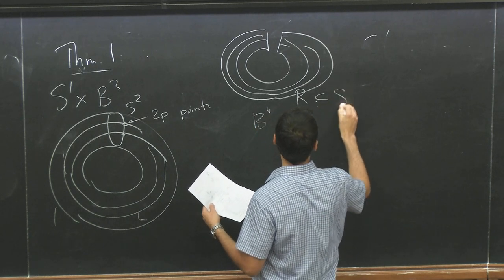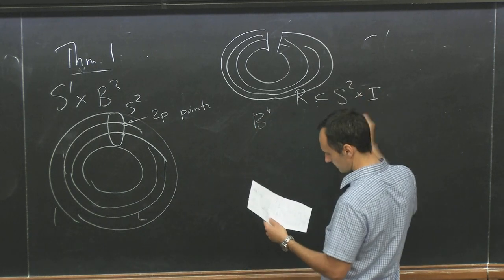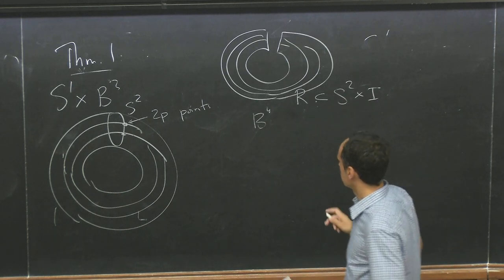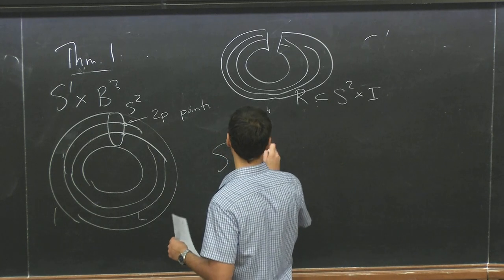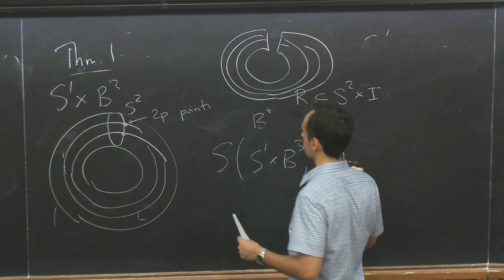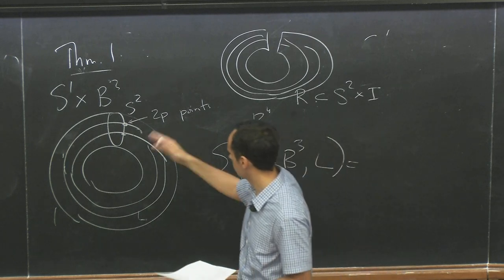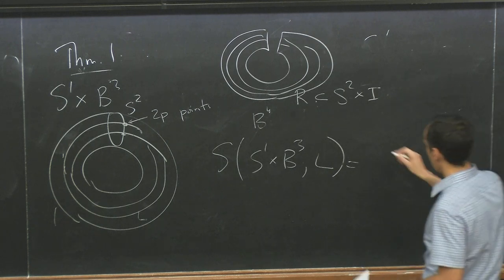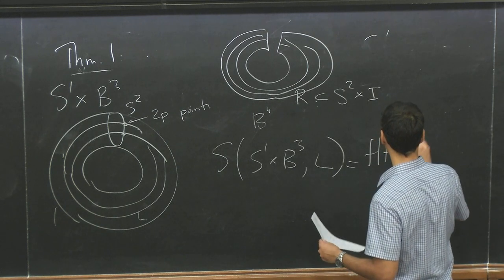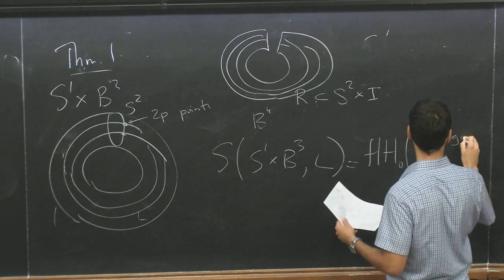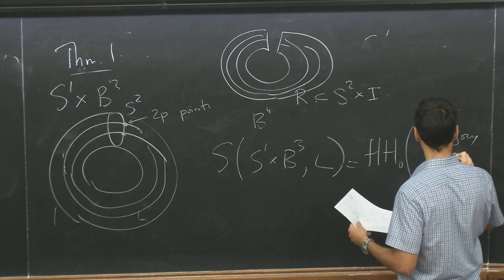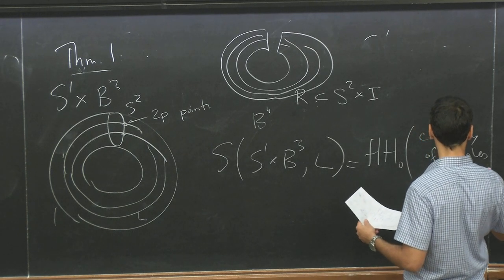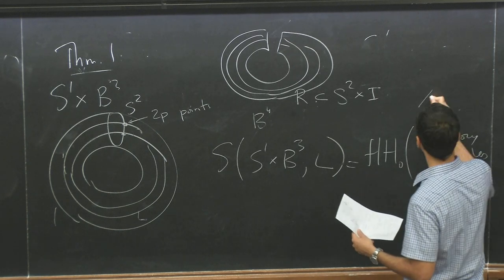So I cut this open. I get just a B4. And I have this tangle. Yeah, let's call it R. So R is in, well, it's in S2 times I. It's in S3 minus two balls. So the skein lasagna of this thing. I'm just doing this example, but I mean, you can generalize it to attaching one handles to anything.